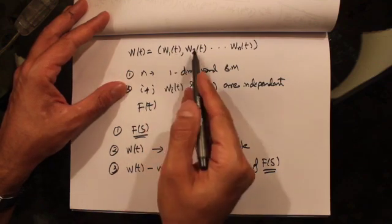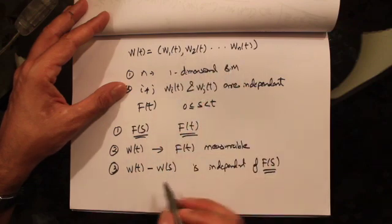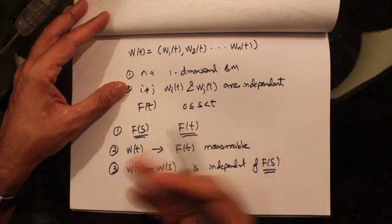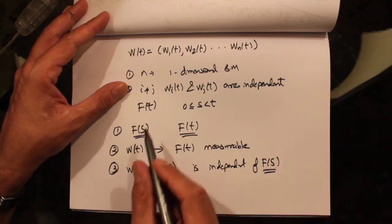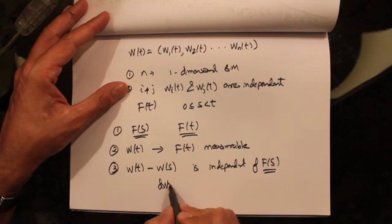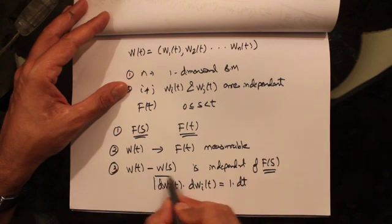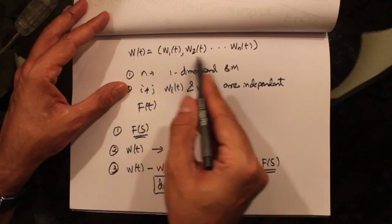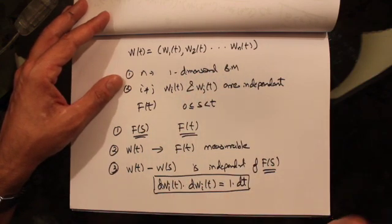Now since these are individually one-dimensional Brownian motions, we can write down the quadratic variation of each. We know that the quadratic variation of a Brownian motion accumulates at one per unit time, which we can write as dW_i(t) · dW_i(t) = dt. This comes from the fact that each one is a one-dimensional Brownian motion.